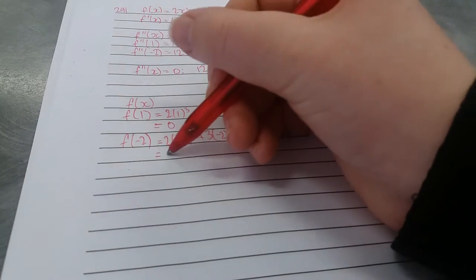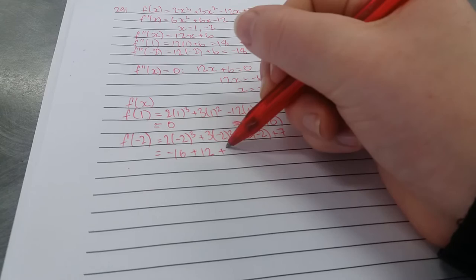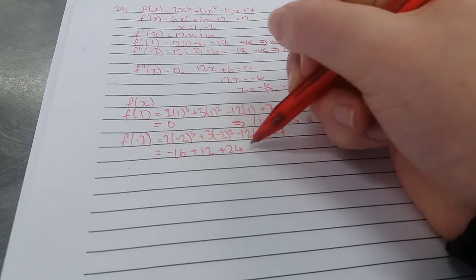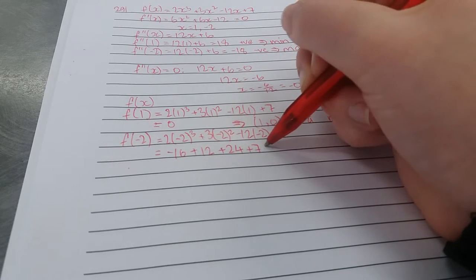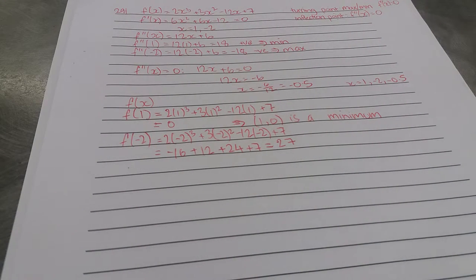f(-2) = 2(-2)³ + 3(-2)² - 12(-2) + 7, which is -16 + 12 + 24 + 7 = 27.